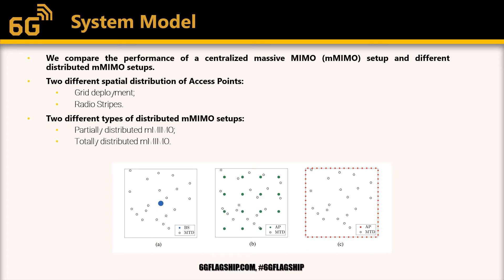A partially distributed Massive MIMO, where the access points are equipped with multiple antennas, and a totally distributed Massive MIMO, where all the access points are equipped with a single antenna.